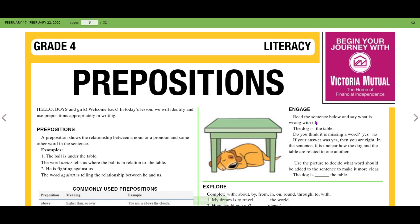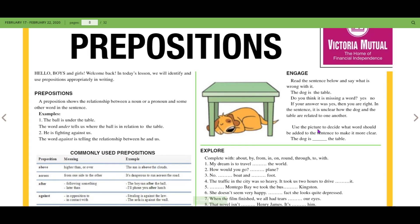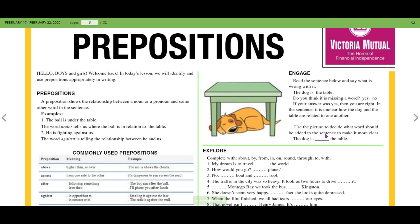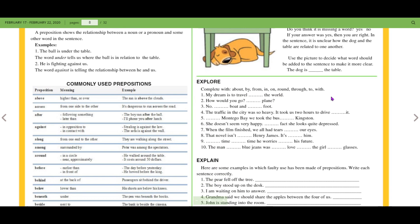Engage. Read the sentence below and say what is wrong with it. The dog is the table. Do you think it is missing a word? Yes or no? If your answer was yes, you are right. In the sentence, it is unclear how the dog and the table are related to one another. Use the picture to decide what word should be added to the sentence to make it more clear. So the dog is under the table. Let's explore.